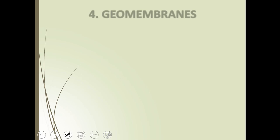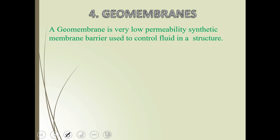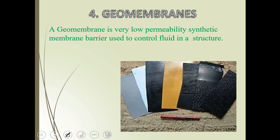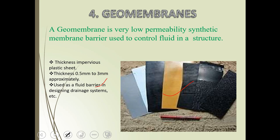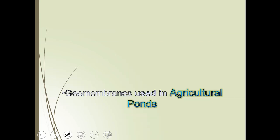Geomembranes are an impermeable layer — we can use them as a barrier layer. A geomembrane is a very low permeability synthetic membrane barrier used to control fluid in a structure. The thickness of the impervious plastic sheet is generally 0.5 mm to 3 mm approximately.